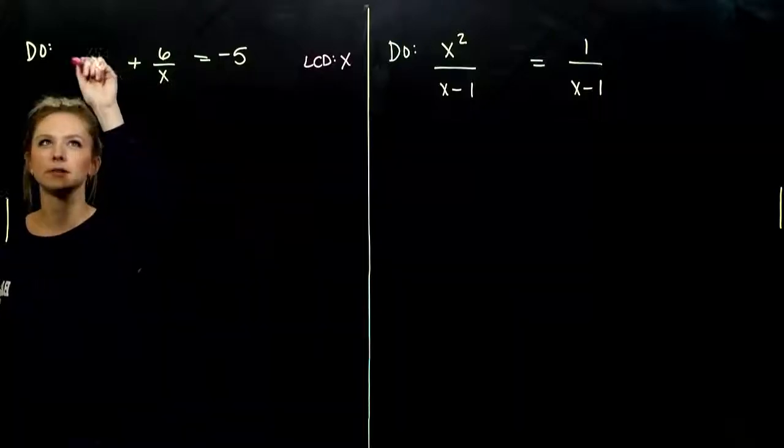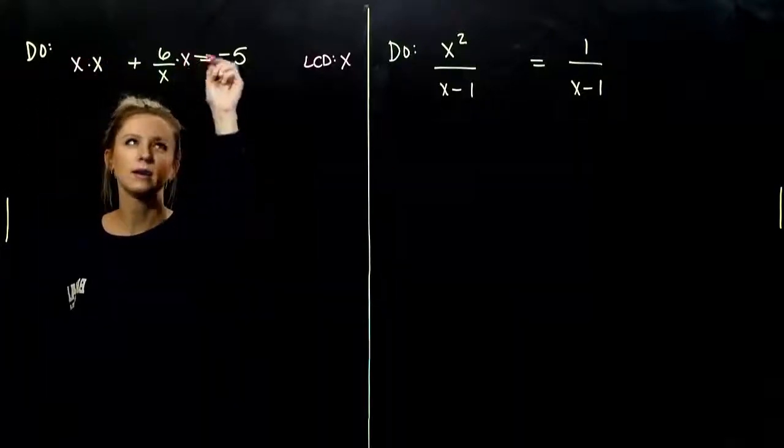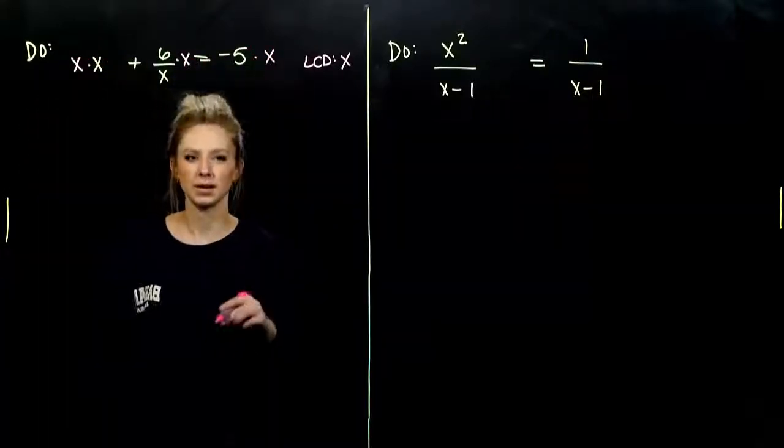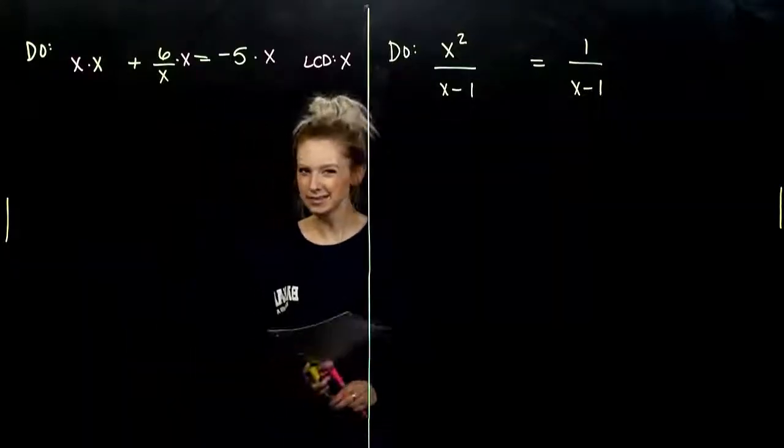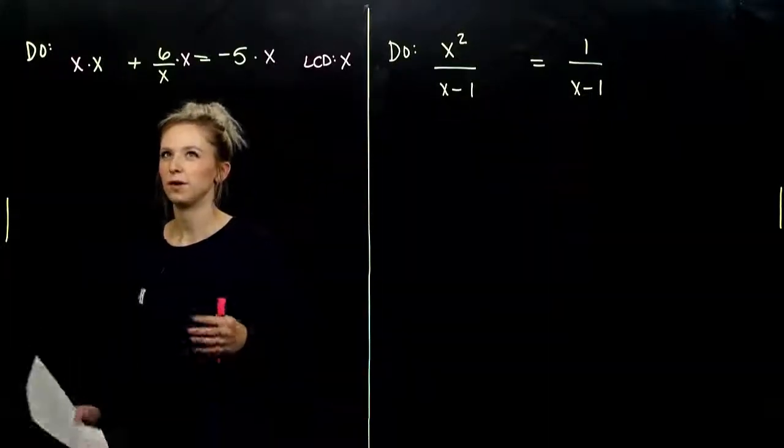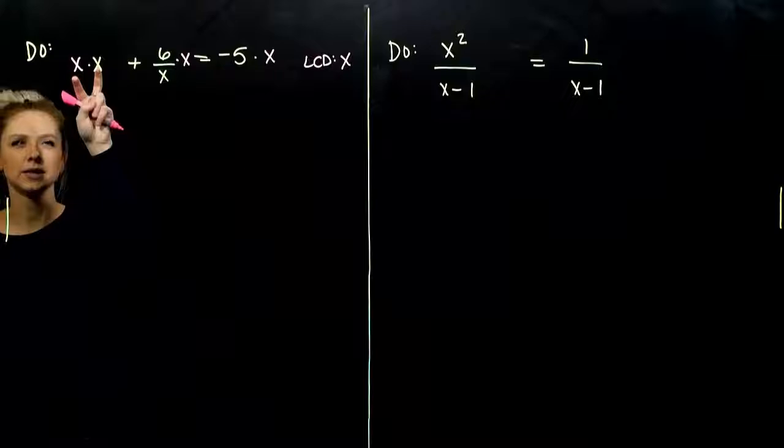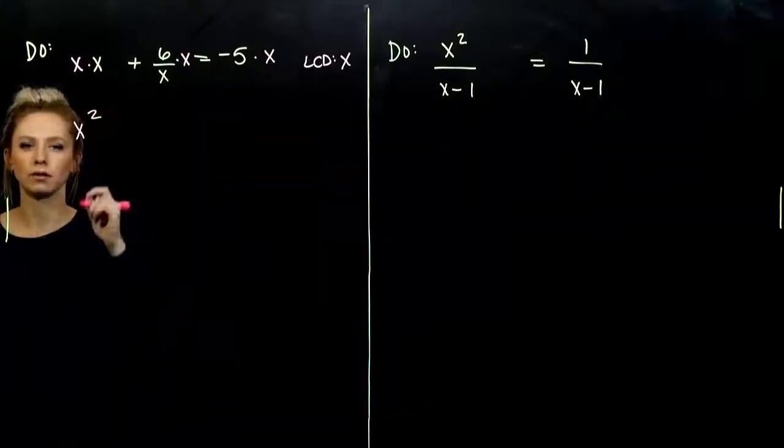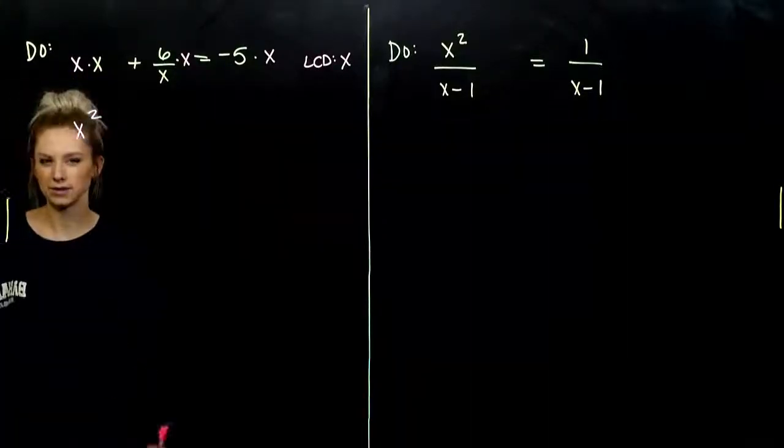So, if I multiply every single term by x, what's happening with this one that we haven't seen yet? Let's figure it out. So, I've got x times x, which gives me x squared.